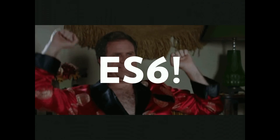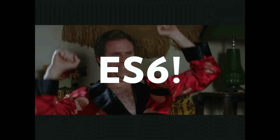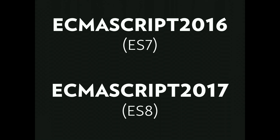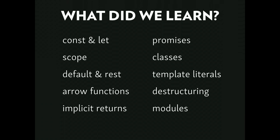And guess what? We've covered ES6! You already know ES7, and ES8 has just been finalized with cool things like generators. Let's quickly review what we learned: const/let as the new var, and how const signals to other developers that something won't change. Scope — remember those curly brackets. Default and rest parameters. Arrow functions and how they solve the problem of flexible this binding. Implicit returns. Promises. Classes and how they're not true classes — be aware of that. Template literals. Destructuring. And finally, the awesomeness of JavaScript modules.